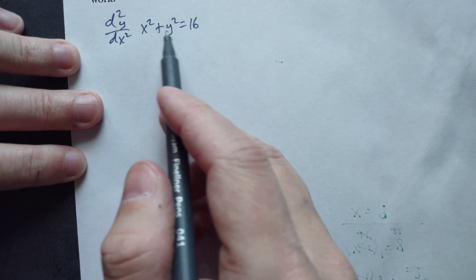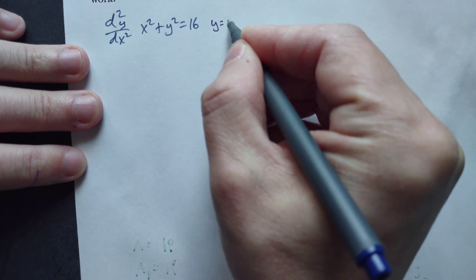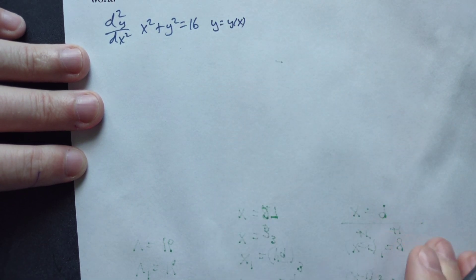Find a second derivative with respect to x of x squared plus y squared equals 16 using implicit differentiation. Remember that here y really means y of x, some unknown function of x.